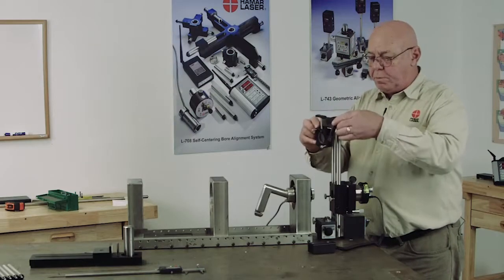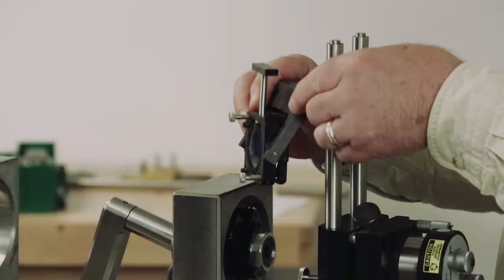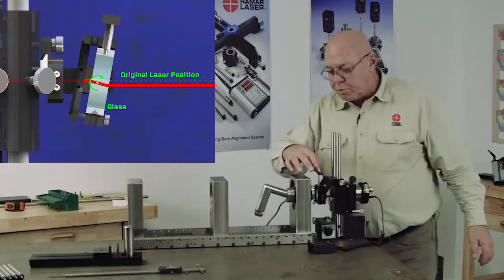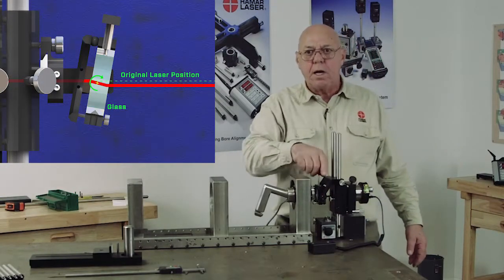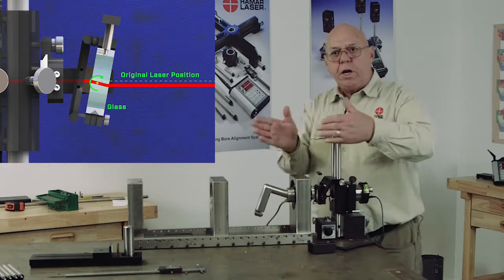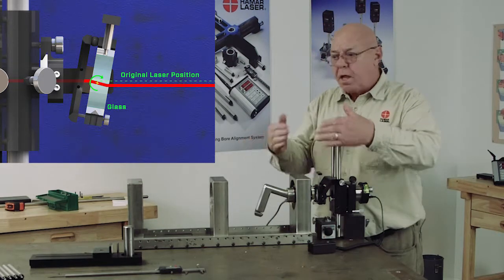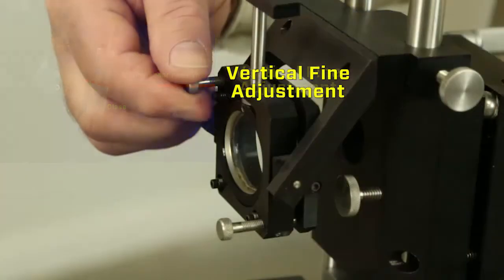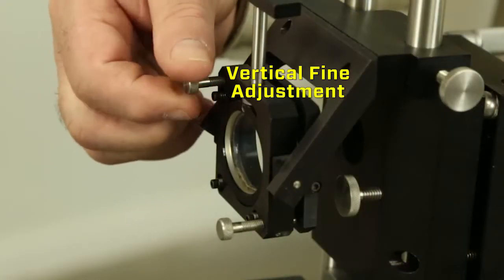Now I'm going to put the beam translator on and I can fine tune this. The beam translator has this handle on the top. If I turn this, I change my horizontal numbers. If I tip it one way or the other, I change my vertical numbers. And then there's fine adjustments here.